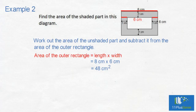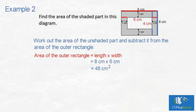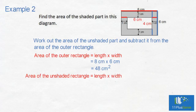The width equals 6cm, take away 1cm, take away 1cm, which equals 4cm. The area of the unshaded rectangle equals length times width, which is 6cm times 4cm, which is 24cm squared.